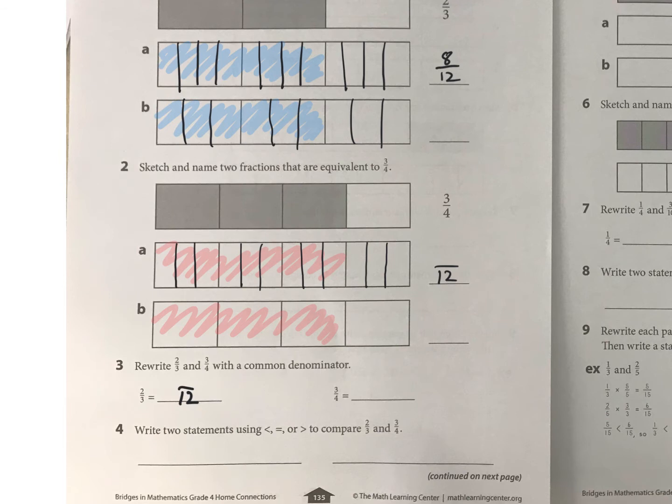And your common denominator here is also twelfths, which we already did. If you didn't know from the model how to do this, you can just multiply, right? Three-fourths times what is going to give you twelfths? How do you get twelfths? Well, you multiply by three-thirds, because four times three is twelve.